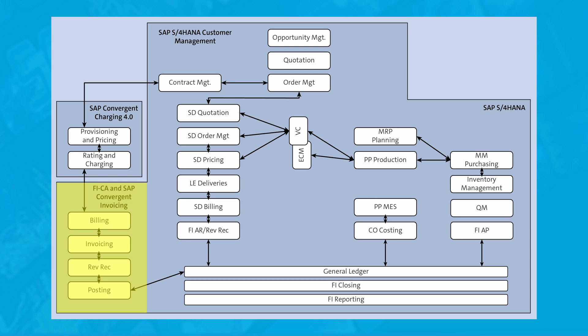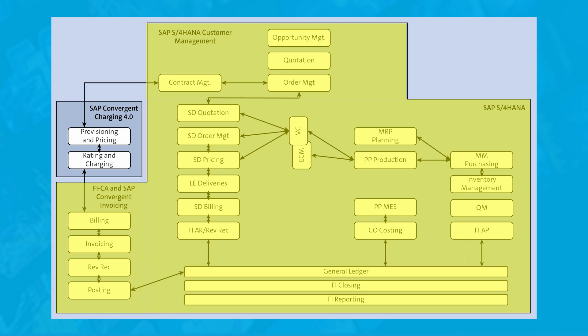Unlike SAP Brim subscription order management and SAP Convergent Charging, which come as separate applications, SAP Convergent Invoicing is not a separate application and is a part of contract accounts receivable and payable, which is included as part of the core SAP S/4 HANA portfolio. This means that SAP Convergent Invoicing is natively integrated with all SAP S/4 HANA areas out of the box, especially SAP S/4 HANA Cloud for contract accounting and invoicing.